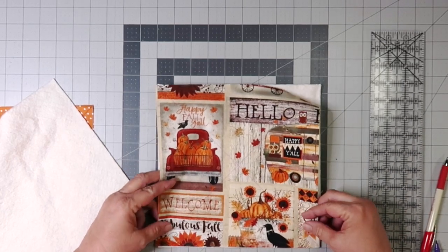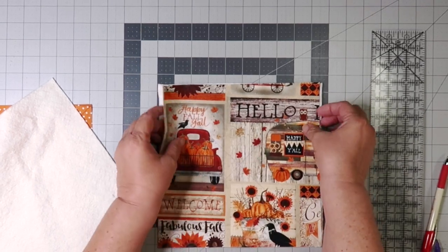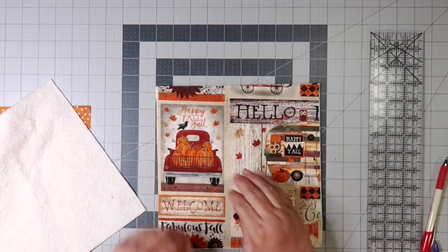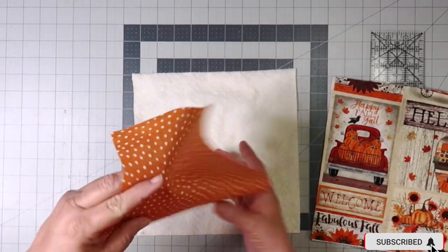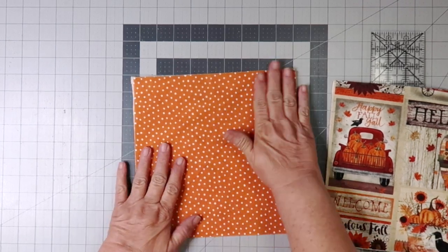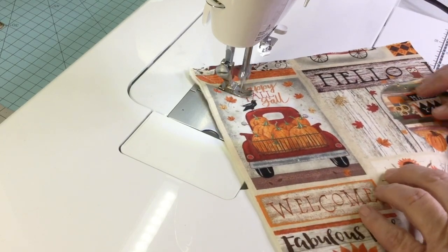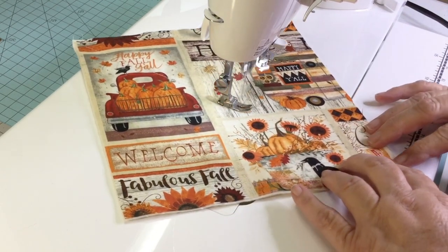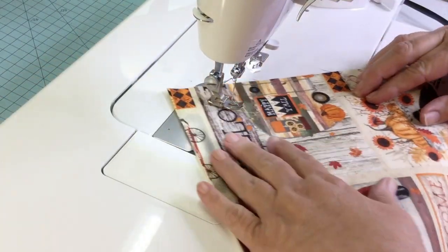Now place your fabric on top of your cotton batting. And now sew on your drawn lines. And due to the batting, I have increased my stitch length to three.